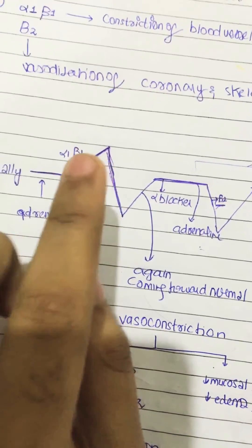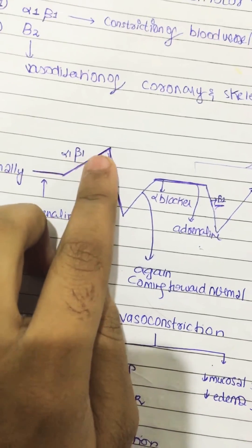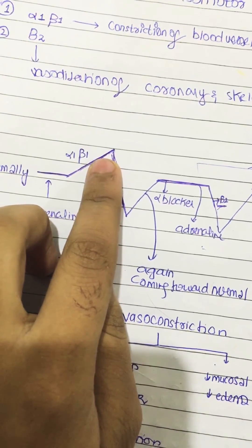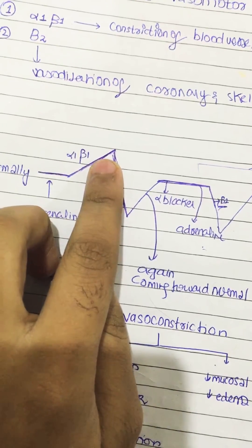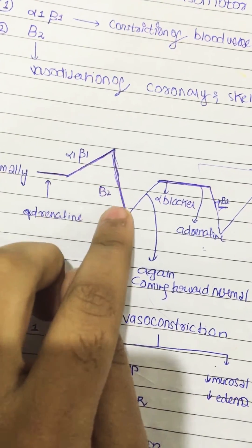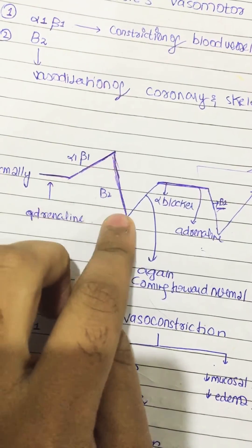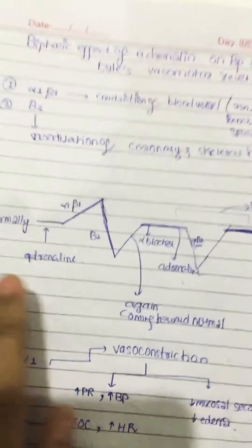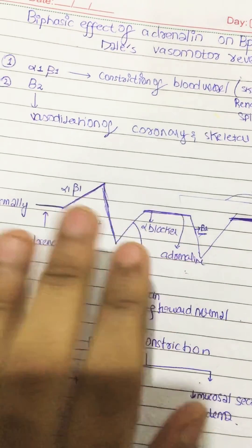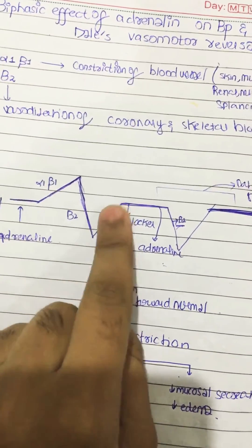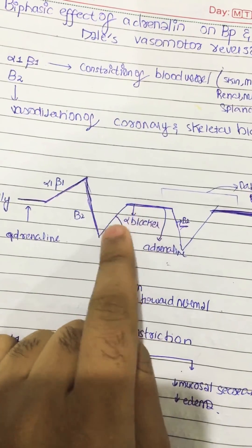Then after some time, adrenaline also acts on beta-2 receptors, which cause vasodilation of the coronary and skeletal blood vessels. Because of this, the blood pressure comes back down. This is called the biphasic effect of adrenaline on blood pressure — the blood pressure returns to normal.